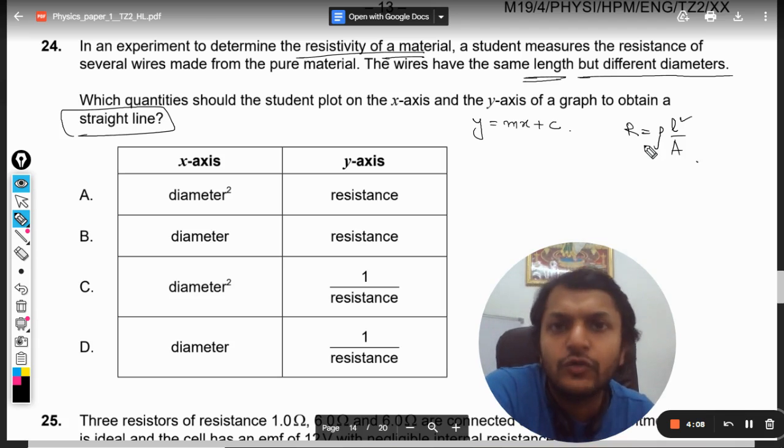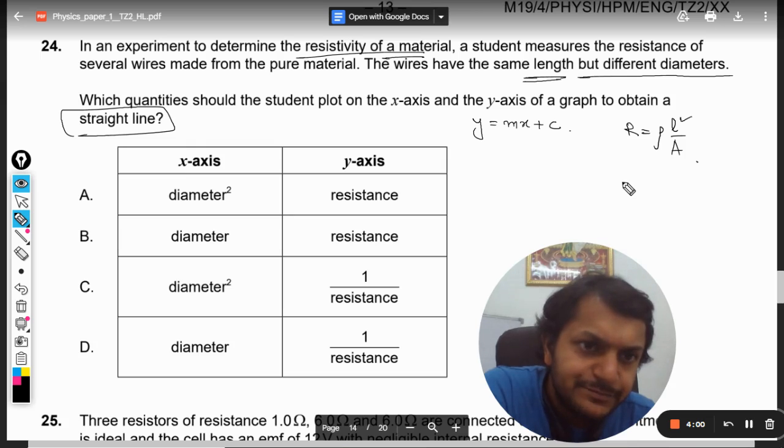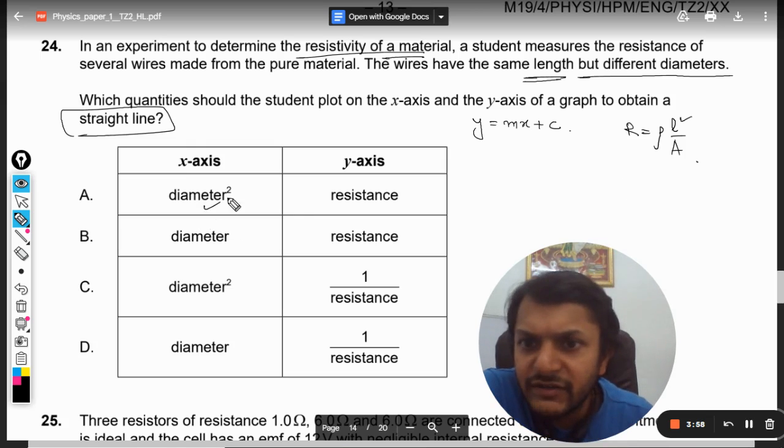Length is not a variable, so we need not worry about it. Resistivity is what we want to determine. It will be a straight line if we use diameter squared, which basically means area because A = πd²/4.